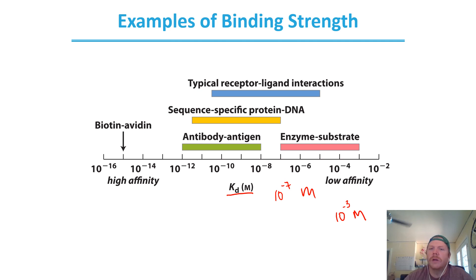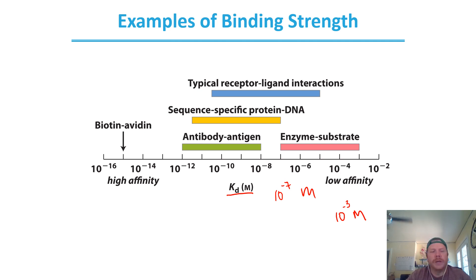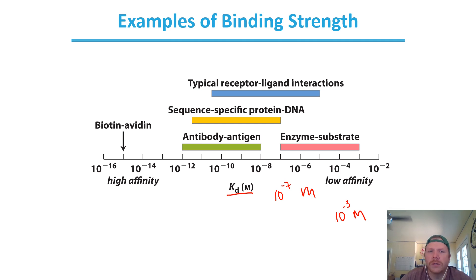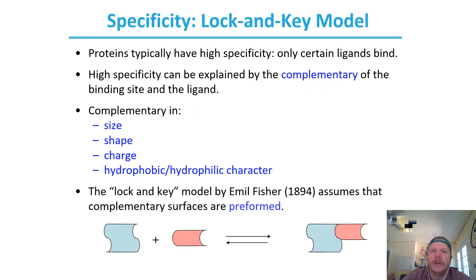In the grand scheme of things, an enzyme-substrate interaction is a low affinity interaction, which makes sense because you're trying to catalyze a reaction. You want the reaction to move forward, so you want to bind the substrate and then release it — those are the two parts of the enzyme-substrate interaction: the binding and the release.